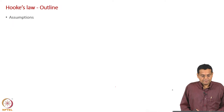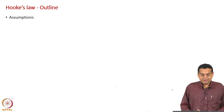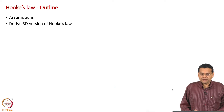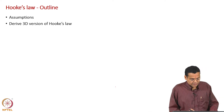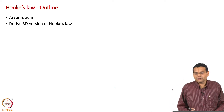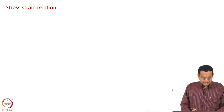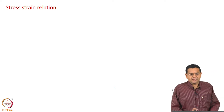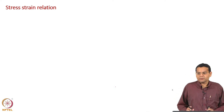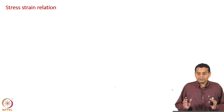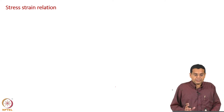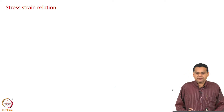The outline is: first we discuss assumptions, then derive the 3D version of Hooke's law. Hooke's law in a simpler form should be well known to most of us, but we will derive the full 3D version. The question arises: why do we discuss assumptions now?